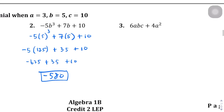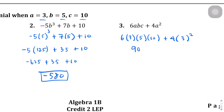For question three, we plug in all three values: a equals 3, b equals 5, c equals 10. We get 6 times 3 times 5 times 10 plus 4 times 3 squared. Six times 3 times 5 times 10 is 900, and 4 times 9 is 36. So 900 plus 36 equals 936.